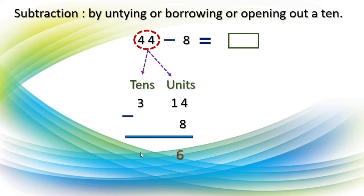3 tens minus 0 is equal to 3. So the answer is 36. Means 44 minus 8 is equal to 36.